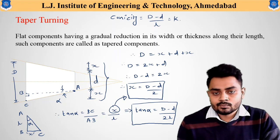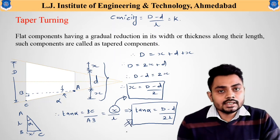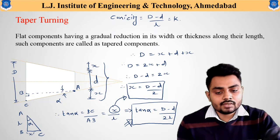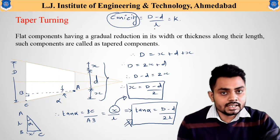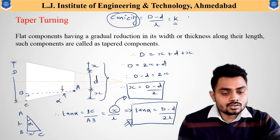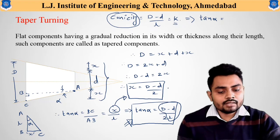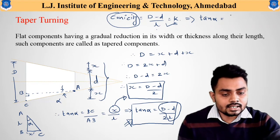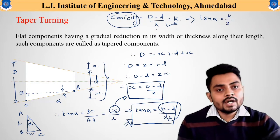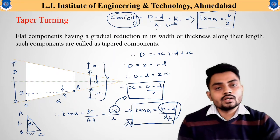Now if we want to write this equation in the form of conicity, we consider the conicity equation: capital D minus small d divided by L equals K. So tan alpha equals, substituting D minus d divided by L with K, we get tan alpha equals K divided by 2. This gives the relationship between the taper angle and the conicity term.